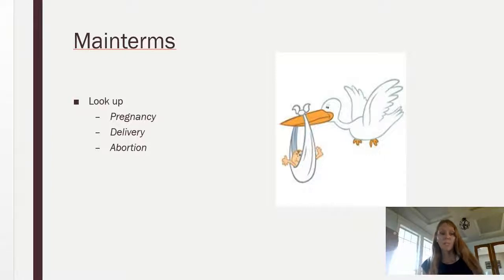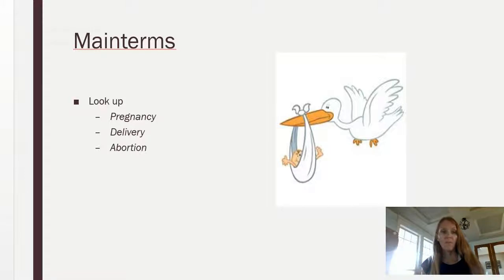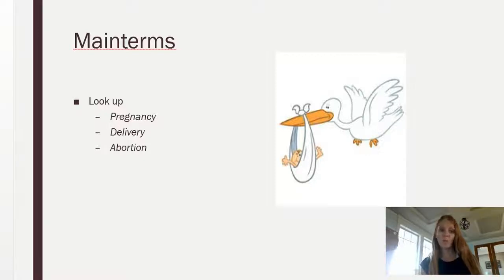Pregnancy is something that happens from conception up until delivery. Delivery would be something that happened from stage one of delivery or labor all the way to the end. Abortion is when the baby doesn't make it — usually before 22 completed weeks.